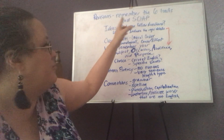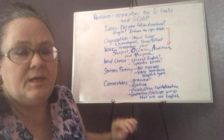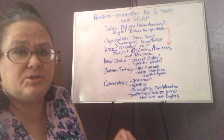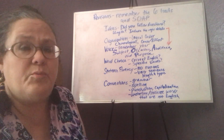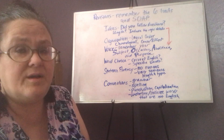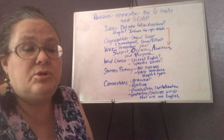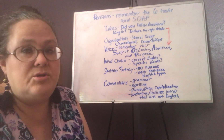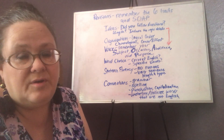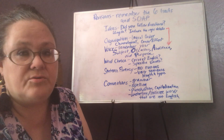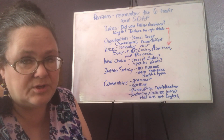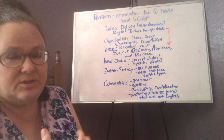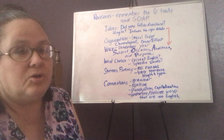It says revisions — remember the six traits and SOAP. I think I talked a little bit about SOAP in another video, but I'm not sure I've talked about the six traits, so I'm going to go over this in the context of revising your bio. You should have your rough draft in front of you and you should be ready with a pen or pencil to make changes on that rough draft — cross things out, circle, draw arrows, write things between the lines that you skipped, hopefully. These are the kinds of changes that I would like you to consider making in your bios.